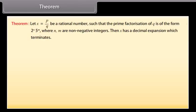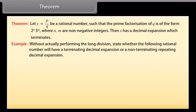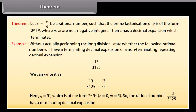Theorem: Let x = P/Q be a rational number such that the prime factorization of Q is of the form 2ⁿ × 5ᵐ, where n and m are non-negative integers. Then x has a decimal expansion which terminates. Example: Without actually performing long division, state whether 13/3125 has a terminating or non-terminating repeating decimal expansion. We write 13/3125 = 13/5⁵. Here Q = 5⁵, which is of the form 2ⁿ × 5ᵐ with n = 0 and m = 5. So 13/3125 has a terminating decimal expansion.